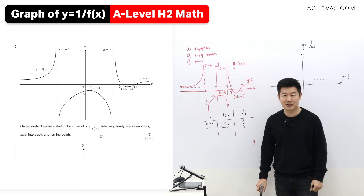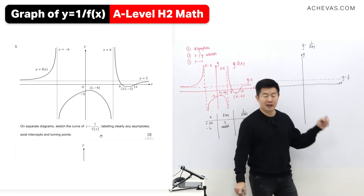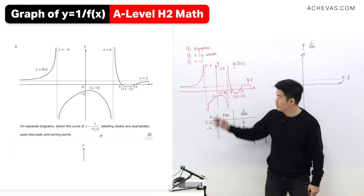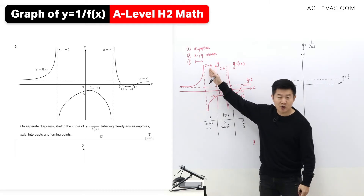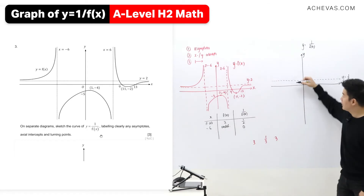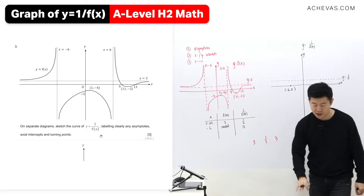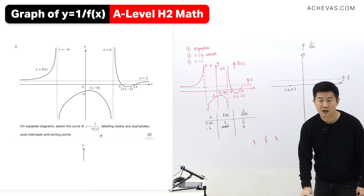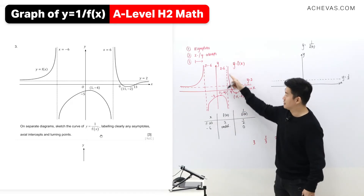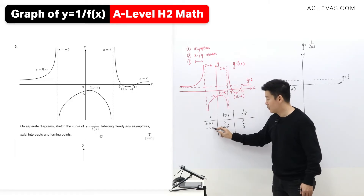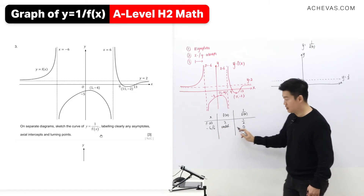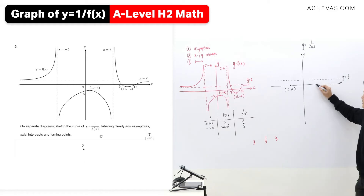I just reverse-engineer a little bit. The transformed version of x equals minus 6 as a vertical asymptote will become a point at minus 6 and 0. Similarly, when x is equal to 6, f(x) is undefined, so I'm expecting a point at 6 and 0.